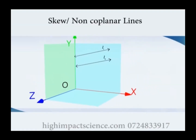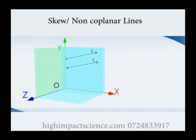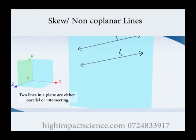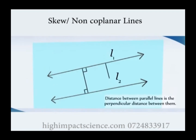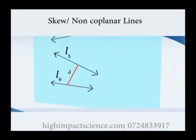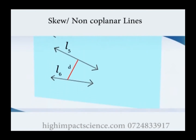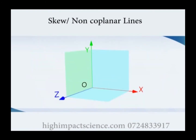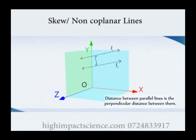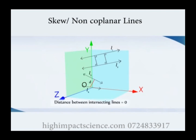Next: skew lines. Any two lines in a plane are either parallel or intersecting. If the two lines are parallel, then the shortest distance between them is the perpendicular distance between them. If the two lines are intersecting, then the shortest distance between them is zero. Equally, in space, the shortest distance between two parallel lines is the perpendicular distance between them, and the shortest distance between intersecting lines is zero.